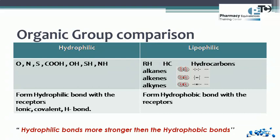Because hydrophilic bonds are stronger, they increase the boiling point and melting point of the compound. So if we compare two organic compounds — one containing OH and the other with no hydrophilic group — we can expect the compound containing the OH group to have a higher boiling point than the one without it.